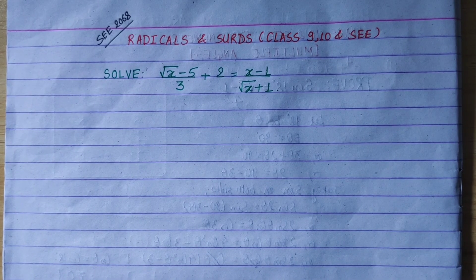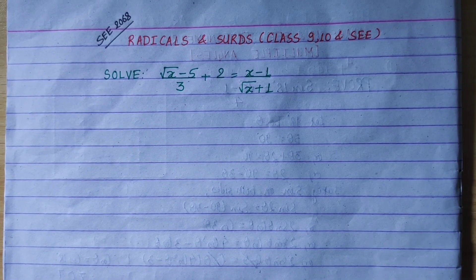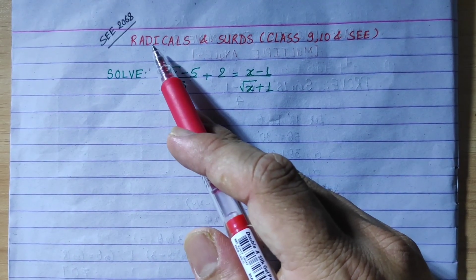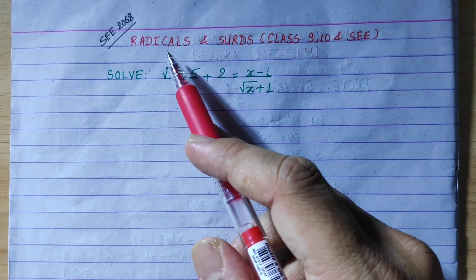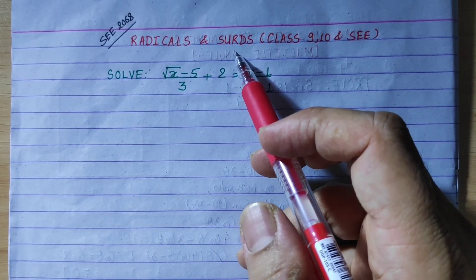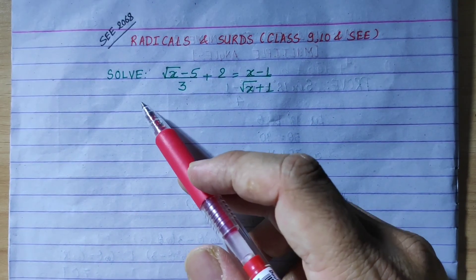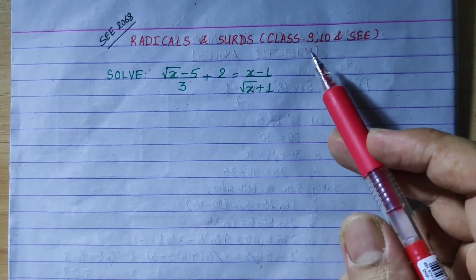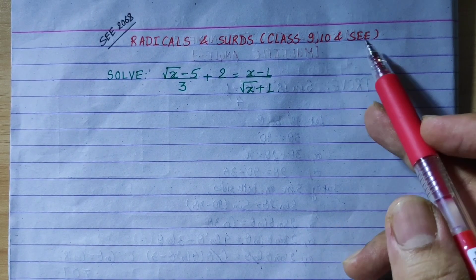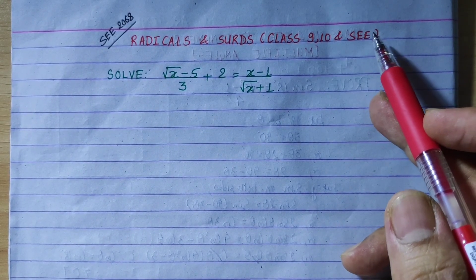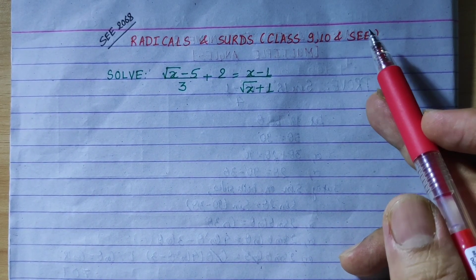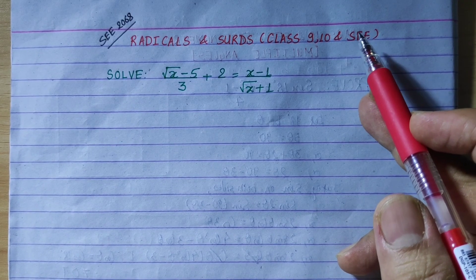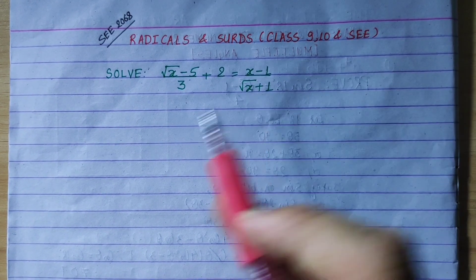Hi everyone. Today we are going to solve the radicals and surds chapter 3. This class 9 topic is going to be asked for exams. This is a very frequently asked question. Let's go to the question.